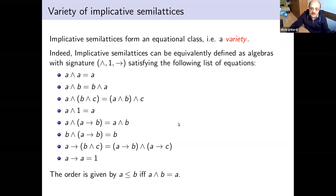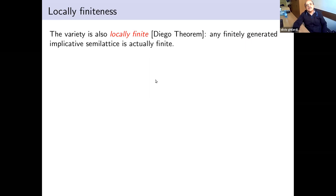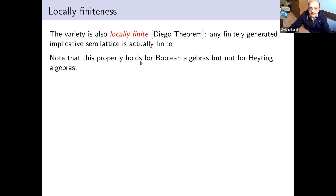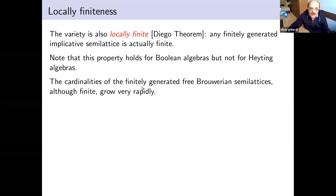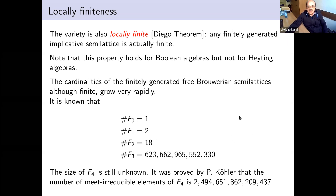You can define the order as usual in semilattices: a ≤ b is the same as a ∧ b = a. The important point is that this variety is locally finite, meaning that any finitely generated implicative semilattice is actually finite. This is Diego's theorem. This is a remarkable property — it is true for Boolean algebras but absolutely not true for Heyting algebras.